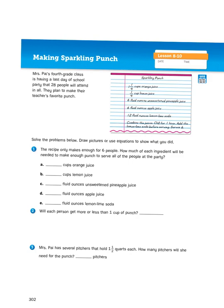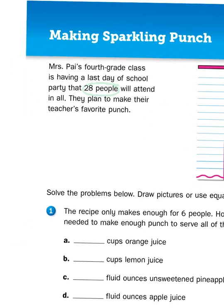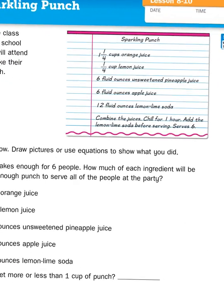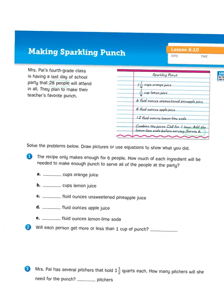So a couple things we need to look at. First of all, there are 28 people going to this party. That is, I'm assuming, Mrs. Pye and all of her students. But over here it says that the recipe only serves 6, meaning when you combine all these ingredients, it will be enough punch for 6 people. So what we need to do is figure out how much we need to increase each ingredient so that we can serve 28 people.